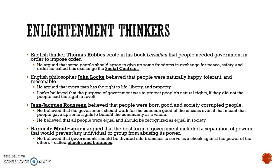English philosopher John Locke believed that people were naturally happy, tolerant, and reasonable. He argued that every man has the right to life, liberty, and property — ideas that influenced the American Constitution and our concept of life, liberty, and the pursuit of happiness. Locke believed the purpose of government was to protect people's natural rights. If the government didn't protect those rights, then the people had a right to revolt and overthrow the government.